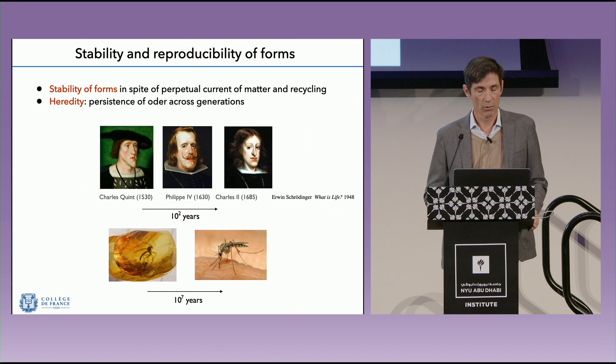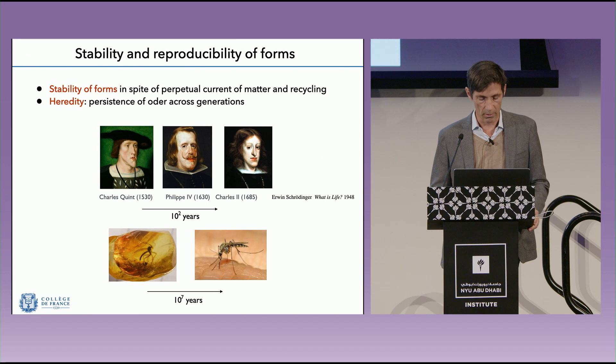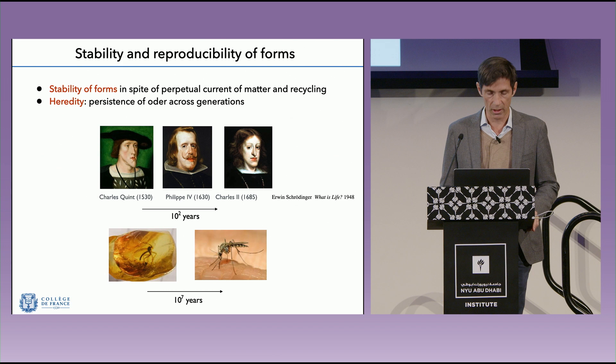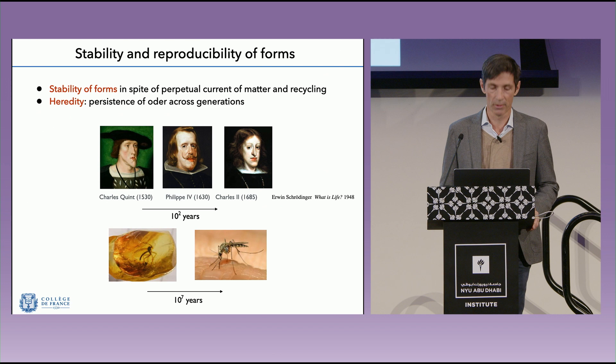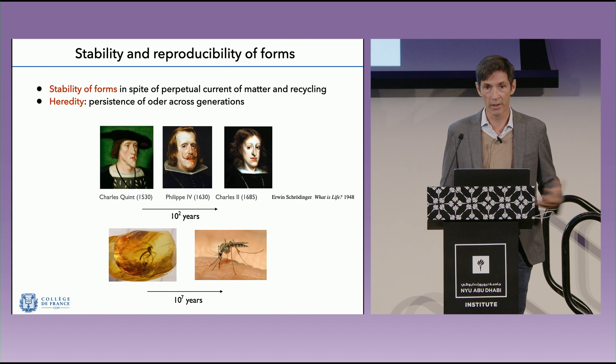There is also the stability of forms referred to as heredity. Erwin Schrödinger, in his book 'What is Life?', refers to the example of the Habsburg family — the very conspicuous shapes of the chin tell us that there is resemblance to parents across generations. In the example of mosquitoes preserved in amber tens of millions of years ago, they are actually the same in structure as those we see today. Shapes have a stability that can exceed geological structures — it took only a few tens of millions of years to produce the Alps, yet mosquitoes haven't changed their shape at all.